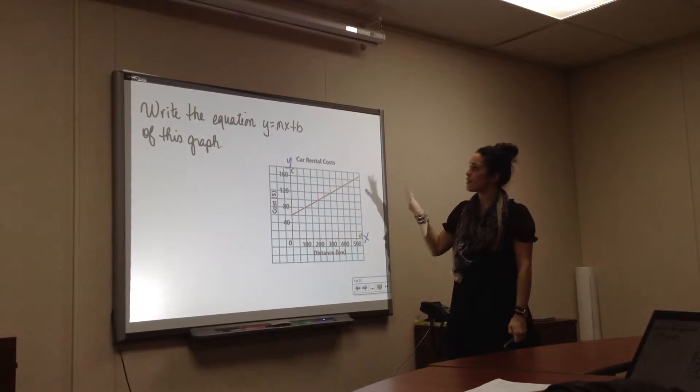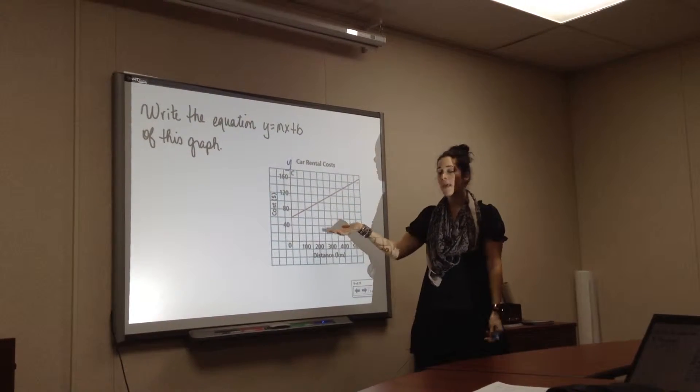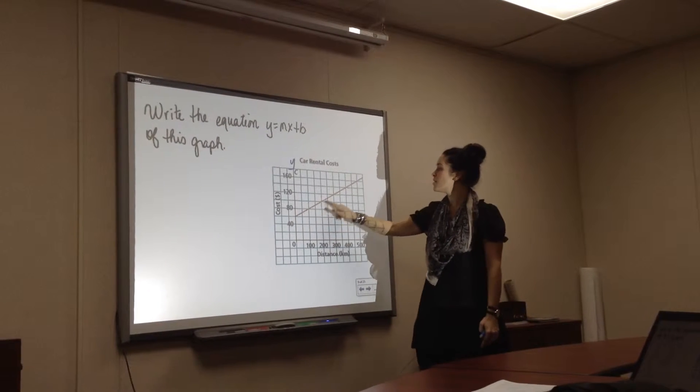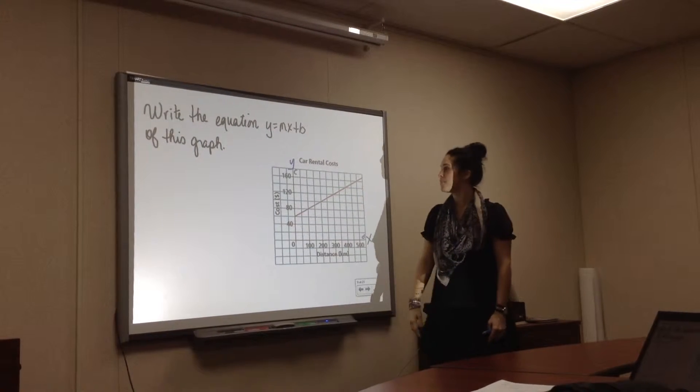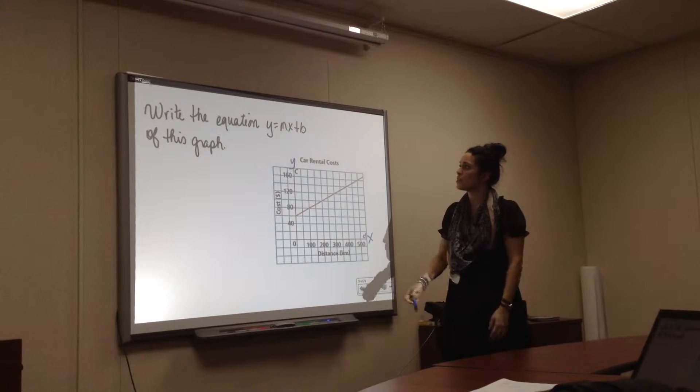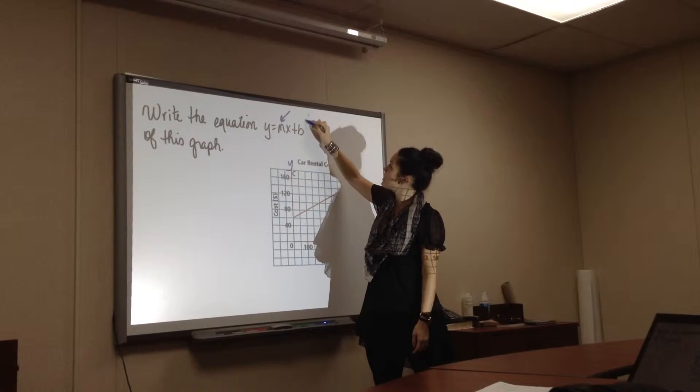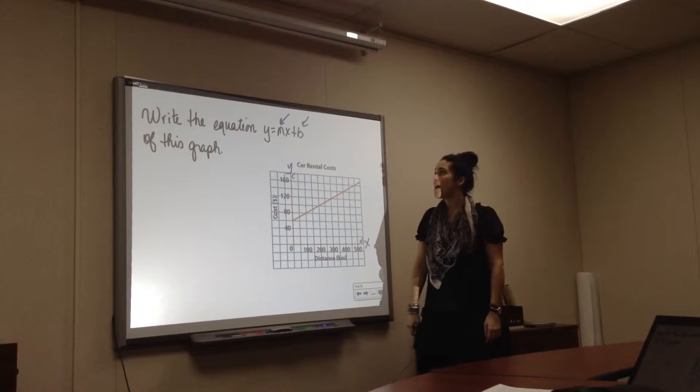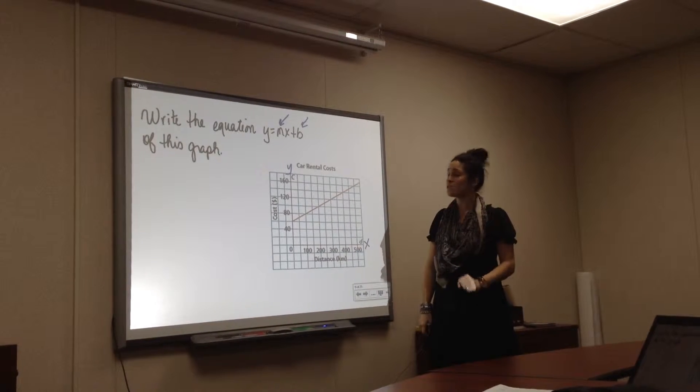So you want to write this equation using a graph. We're going to provide you a graph, and you need to write the equation of the linear relation that's shown, the straight line. The two pieces of information that you should be using are the m and the b. And again, if you don't know what m is or b is, you need to go watch that video. m is the slope and b is the y-intercept.